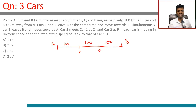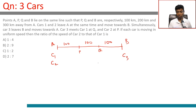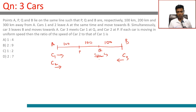Cars 1 and 2 leave A at the same time and move towards B simultaneously. Car 3 leaves B and moves towards A. Car 3 meets Car 1 at Q, and Car 3 meets Car 2 at P.